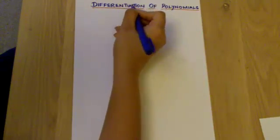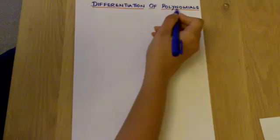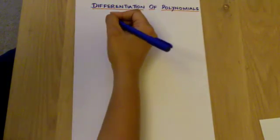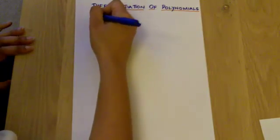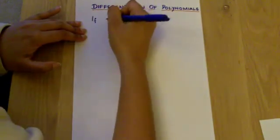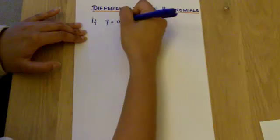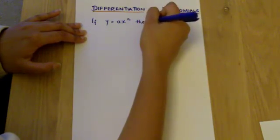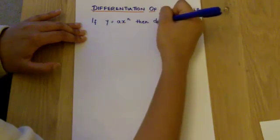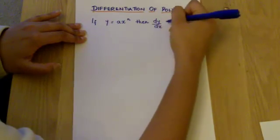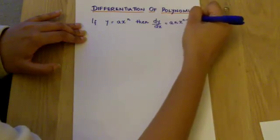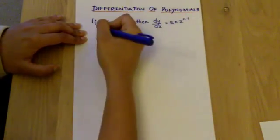This lesson we are going to learn about differentiation of polynomials. The formula to differentiate a polynomial is if y equals ax to the power of n, then dy over dx is equal to an times x to the power of n minus 1.